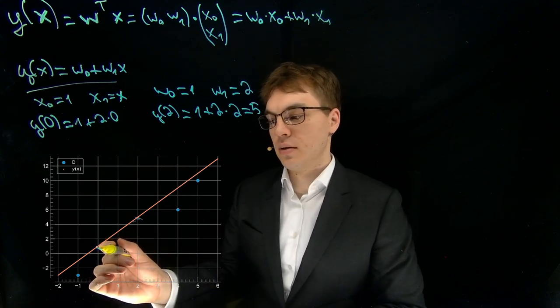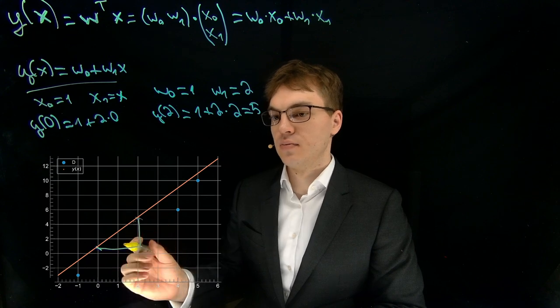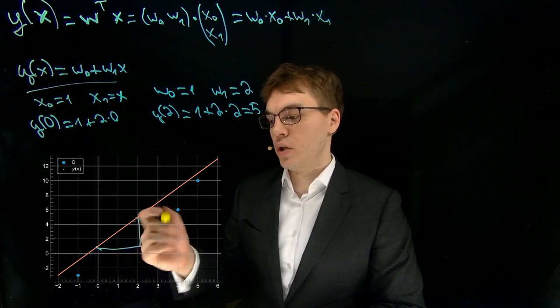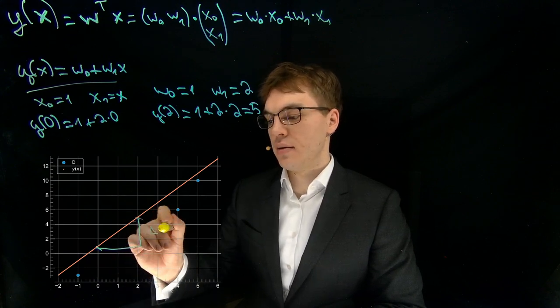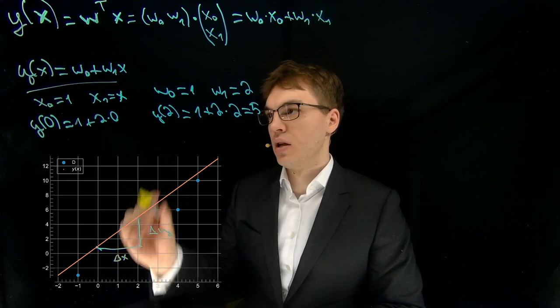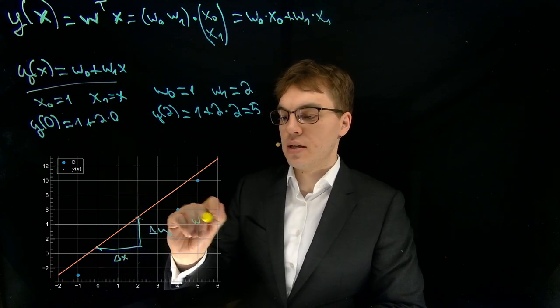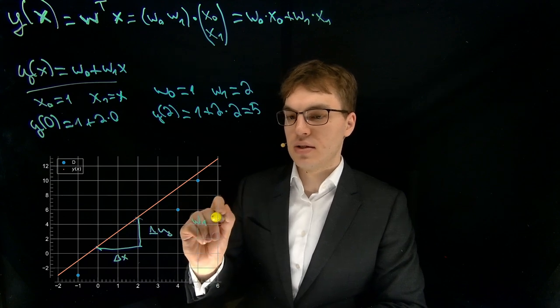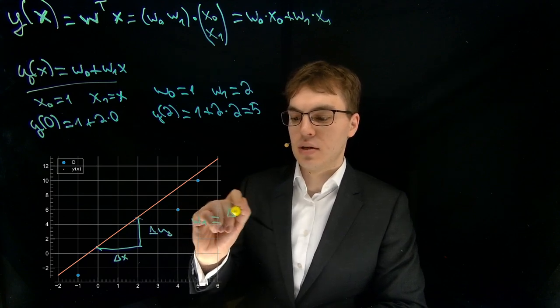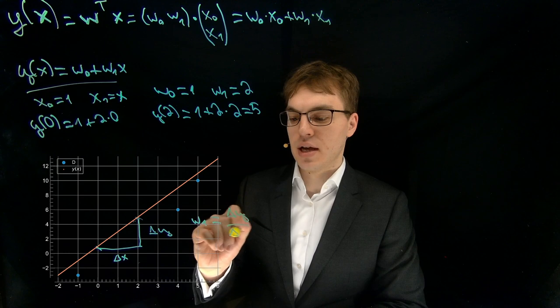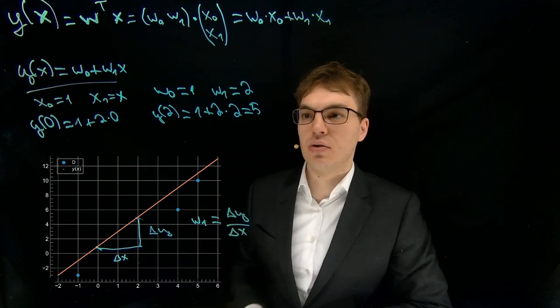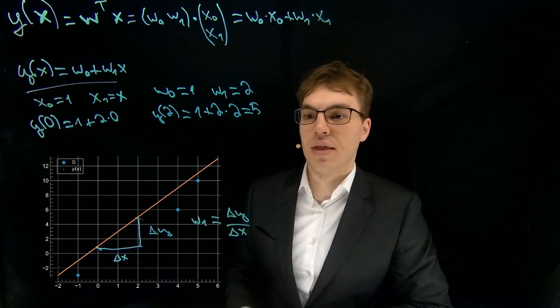And the other one can be computed from the inclination triangle. So if we get this triangle and we take this delta y and this delta x, then this w1 over here is just delta y divided by delta x. And this is how we could do this the other way around.